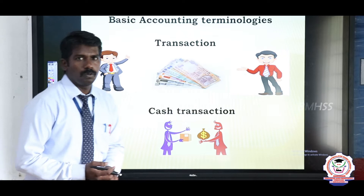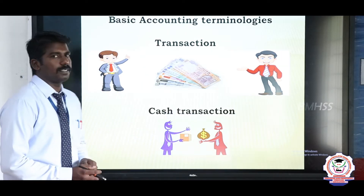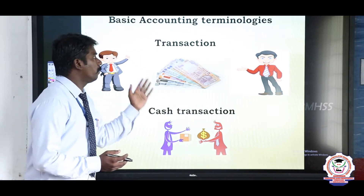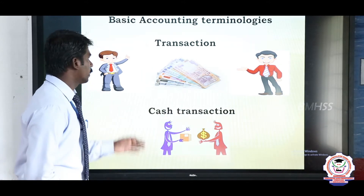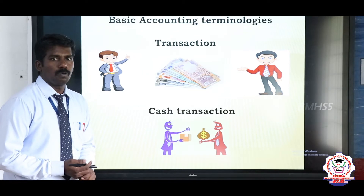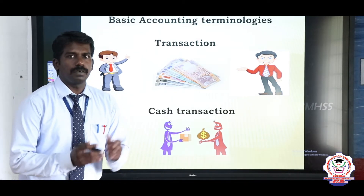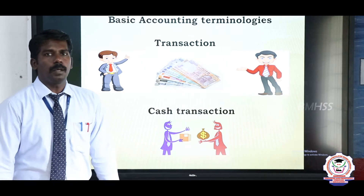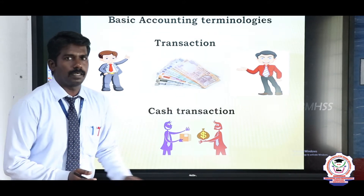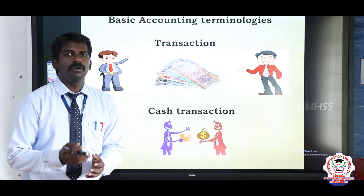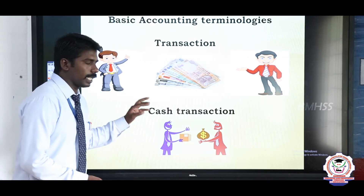First is the transaction. What is a transaction? A transaction is an activity — exchange of money from one person to another person; it is called a transaction. Next one is the cash transaction. What is a cash transaction? When cash is transferred from one person to another person by trading activities like the trading of goods and services from one person to another, it is called a cash transaction.